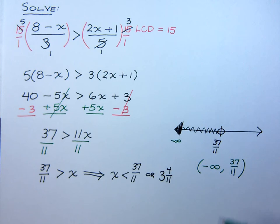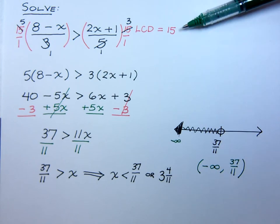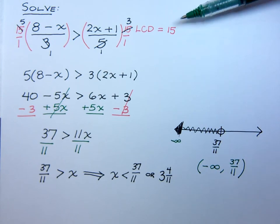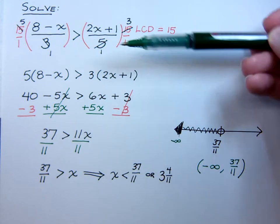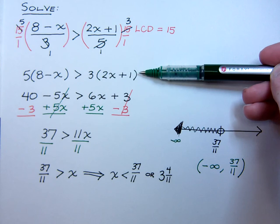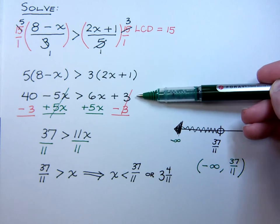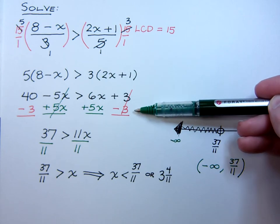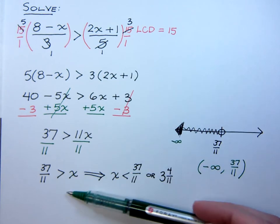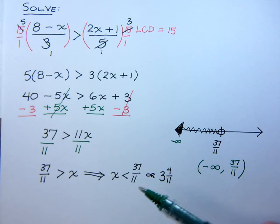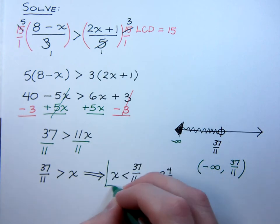So notice the steps that we took here. Get your least common denominator to clear out your fractions that you have here, clear out those denominators. You get a much simplified inequality to solve. Distribute. Use the addition property. Use the multiplication property. And then we flip this guy around to make it a little bit easier to read and graph.